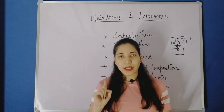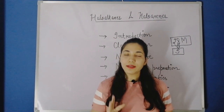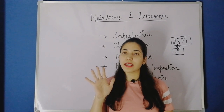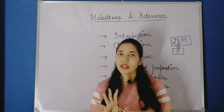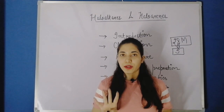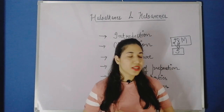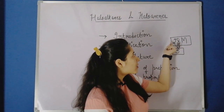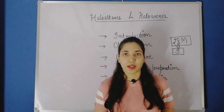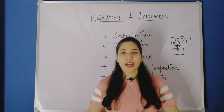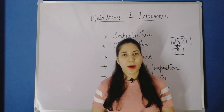The five chapters are: Haloalkanes and Haloarenes, Alcohol Phenol Ether, Aldehyde Ketone Carboxylic Acid, Amines, and finally Biomolecules. Biomolecules se bhi kaafi kuch delete kar diya gaya hai. So these four most important chapters will carry almost the entire 28-mark weightage for organic chemistry. These are very very important.